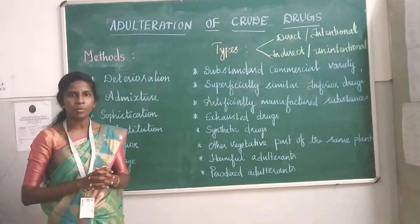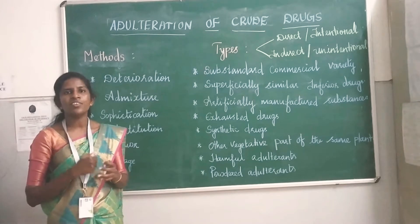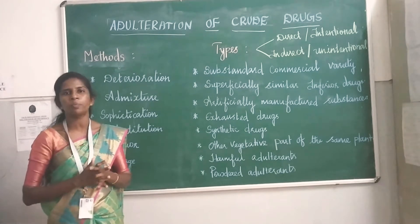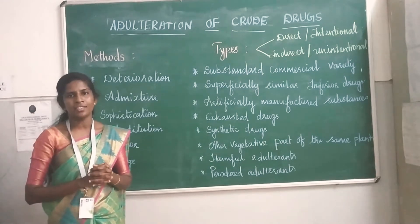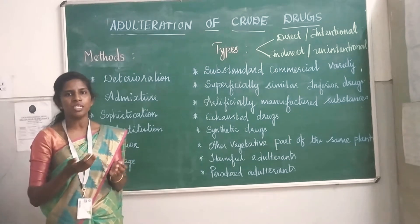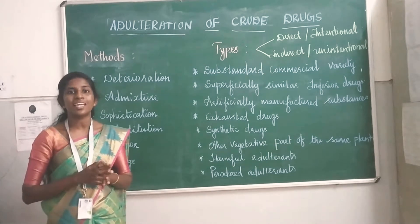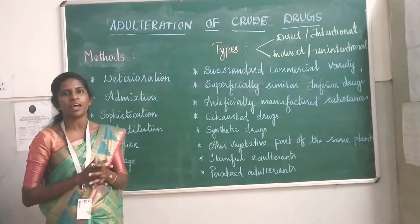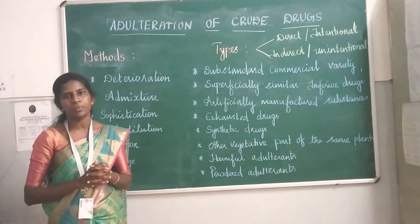Adulteration is nothing but mixing the original drug with some other impure or cheaper drug, either purely or partially. This adulteration may happen knowingly — that is, a deliberate type of adulteration — or sometimes in an accidental or indeliberate manner.